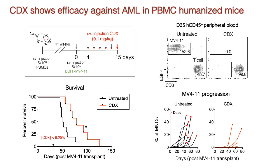To test CDX in vivo, we first humanized mice using primary human peripheral blood mononuclear cells, PBMCs. After engraftment, we injected a FLT3-positive AML cell line, MV411, which was engineered to stably express EGFP. Mice were treated intravenously with six doses of CDX or left untreated. Progression of AML was tracked by monitoring the frequency of EGFP-positive cells in peripheral blood. Treatment with CDX significantly delayed the proliferation of MV411 cells and increased median survival by 28 days relative to untreated mice.